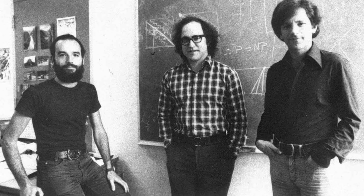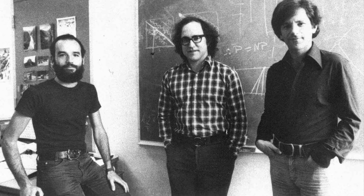The way RSA works at a high level — and the way all asymmetric encryption works — is that you have a private key, which we'll call key A. You want to keep this key a secret: don't share it with anyone, don't tell anyone what it is, make sure there are no screenshots of it or anything like that. Then you have a public key, which we'll call key B, which you give to anybody you want to be in contact with. Put it in all of your signatures, the About section of your social media, write it on a billboard — whatever you want to do.